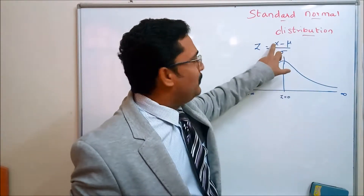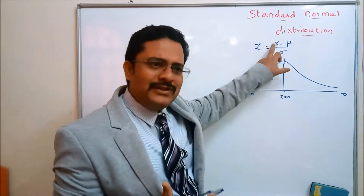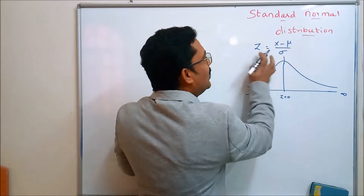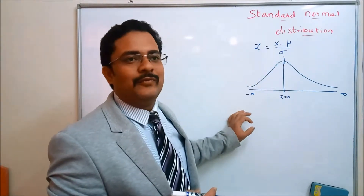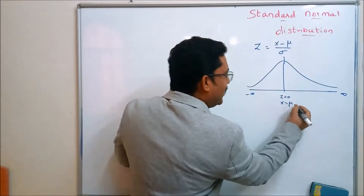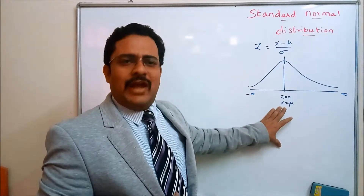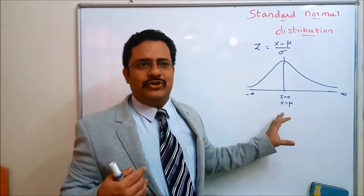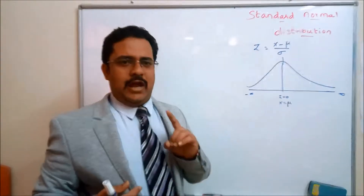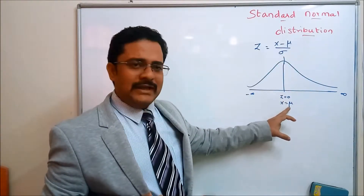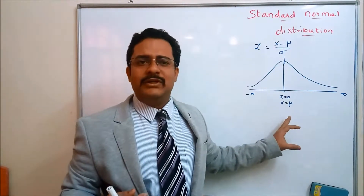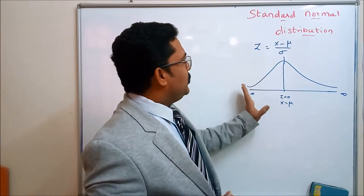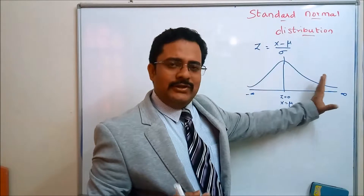Z is equal to 0 — when do you get this? If you put X equal to Mu, then Mu minus Mu divided by Sigma gives Z equal to 0. So this point is nothing but X equal to Mu, the average. Let's recall the properties of this normal distribution: the mean, median and mode coincide at this point, so X equal to Mu. We call it the mean but it is an average. The total area under the standard normal curve is 1.